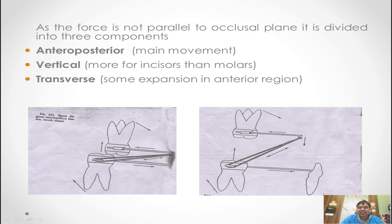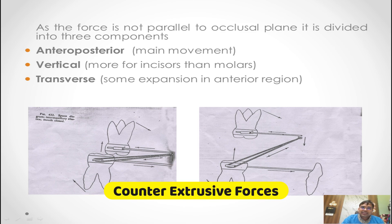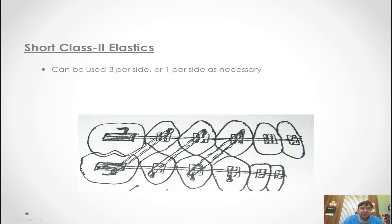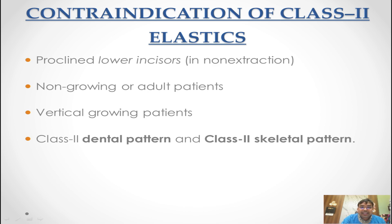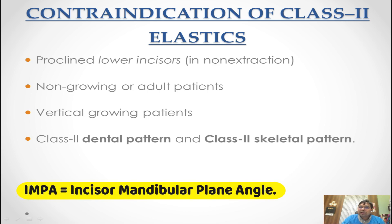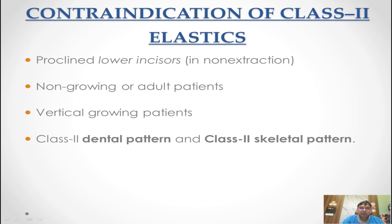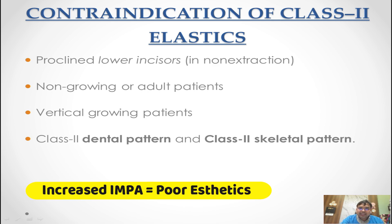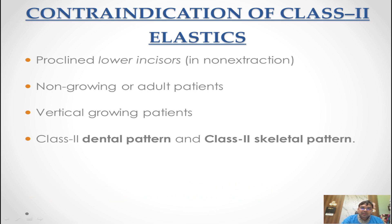Avoid elastics when the IMPA is increased or the lower incisors are already proclined. Short class 2 elastics can be used from upper tooth to lower tooth for settling the occlusion in end-on molar relation or when the molar or premolar is 1-2 mm short of full intercuspation. When IMPA is increased in non-growing or adult patients, dental proclination and deepening of the bite will occur. In vertical growers, extrusion of molars causes the mandible to move down, the gonial angle opens up, worsening the class 2 skeletal pattern by flaring lower incisors.